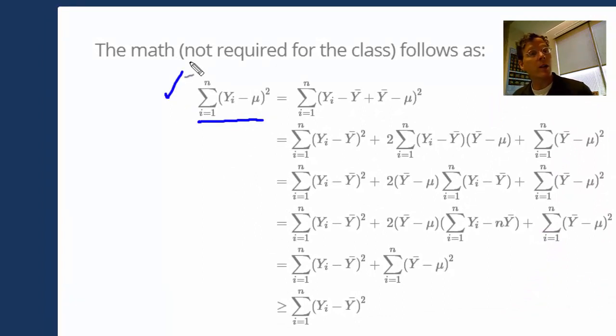This is the quantity I'd like to minimize as a function of mu. My y_i's are my observed data points. I'm going to subtract and then add y bar. So I've just added 0, changes nothing. So I can have an equal sign there.